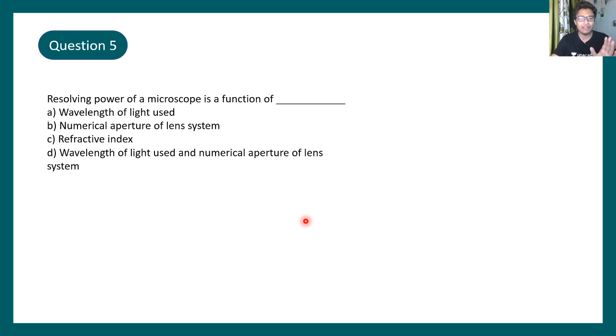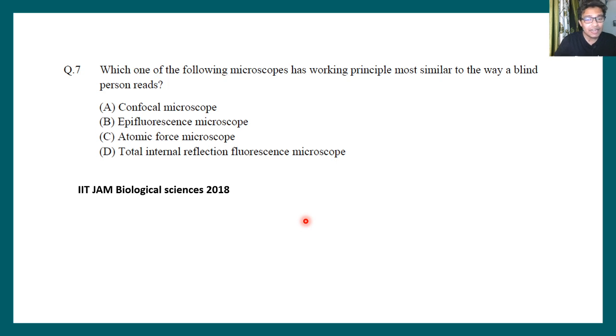Okay, question number five says resolving power of a microscope is a function of. Okay, so we have solved this question. This is one of the most asked questions in many examinations. So you know, this question was again asked in IIT JAM 2018. This question says which one of the following microscope has a working principle most similar to the way a blind person reads? Confocal microscope, epifluorescence microscope, atomic force microscope, or total internal reflection microscope. So what they really want from you is you know the basic principle of these microscopes, microscopy techniques and their usage. So this particular answer would be atomic force microscopy.